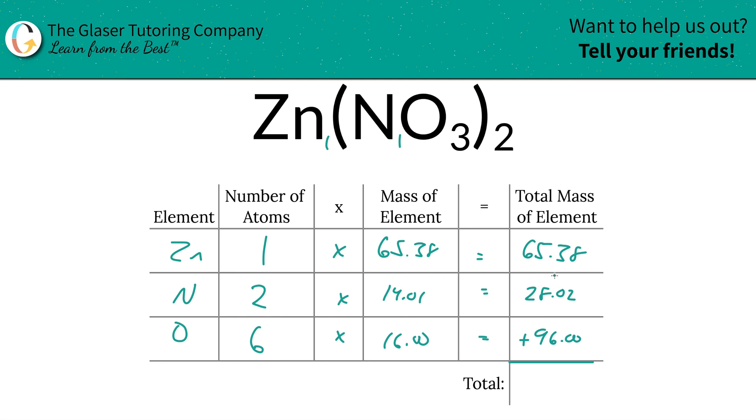And then to find the total mass of the entire compound, just simply add up all the total masses of all the individual elements. So this is going to work out to be 189.40, and the units here are grams per mole, because we're finding molar mass. Now you know how to find the molar mass of zinc nitrate.